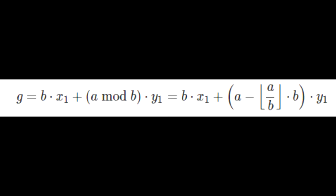So in the original equation, the GCD is equal to B times X1 plus A mod B times Y1, right? Now after substituting the definition of A mod B into A mod B, this is going to equal B times X1 plus (A minus floor of A divided by B times B) times Y1.